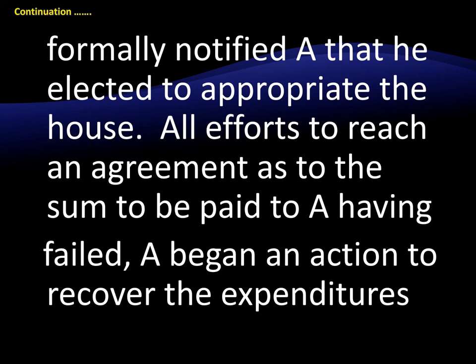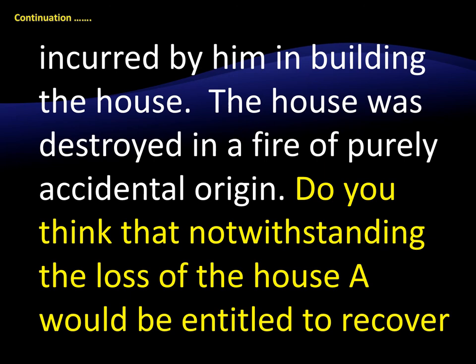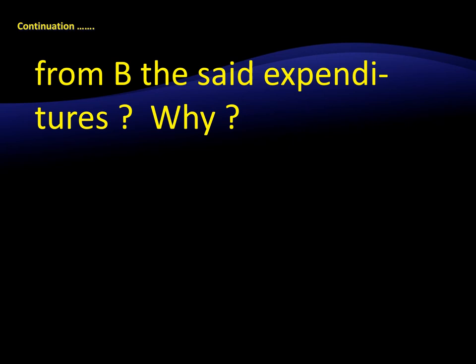The owner discovered the house. B formally notified A that he elected to appropriate the house. So the owner decided to appropriate the house, and you try to remember what legal effects arise from his having appropriated it. While they were to reach an agreement as to the sum to be paid to A, having failed, A began an action to recover the expenditures incurred by him in building the house. The house was destroyed in a fire of purely accidental origin. Tolentino's answer is interesting because he used the outline of an ideal answer — conclusion, black-letter rule, interweaving, and then policy considerations if you still have time. The subject weight was probably more than 5%, that's why he had the luxury of time in discussing the subject.